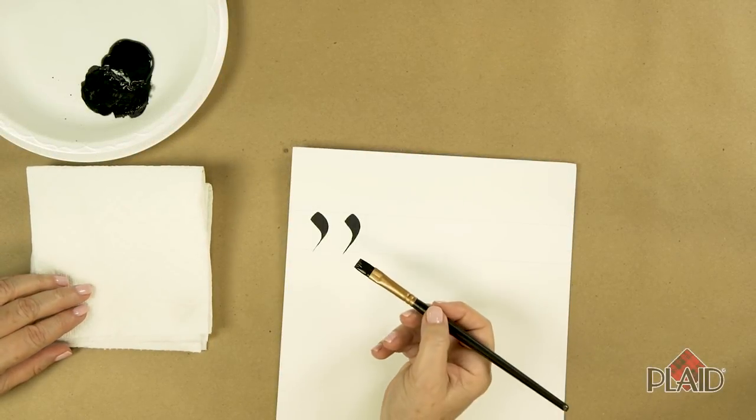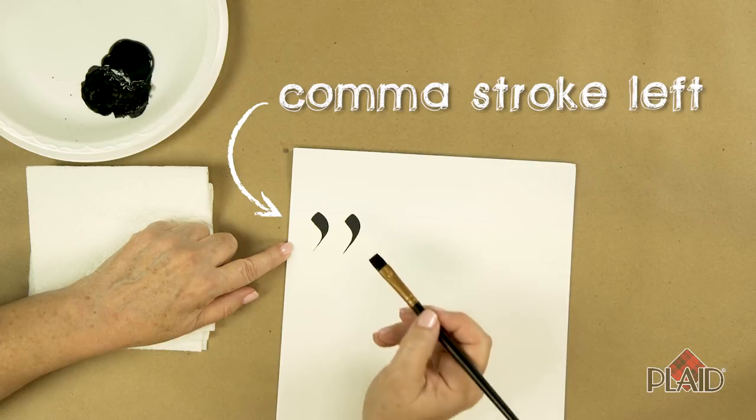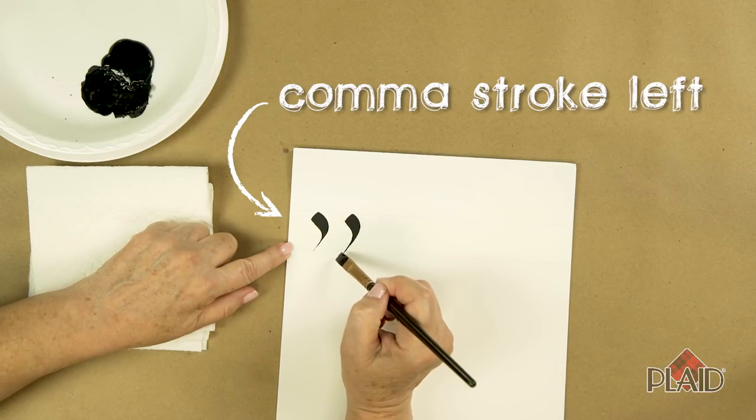The next stroke I'd like to share with you, still using a flat brush, is what we call a comma brush stroke. This is one that is angled to the left.